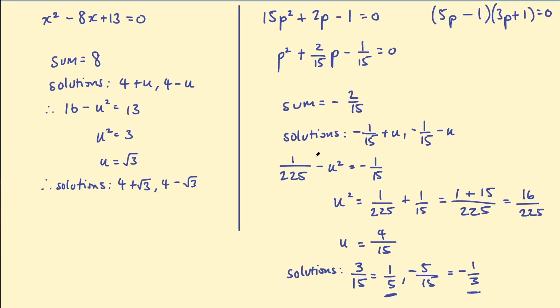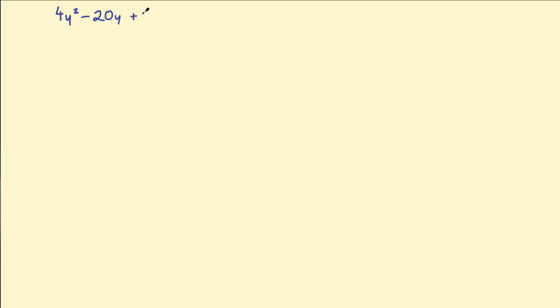Hopefully you're getting your head around how this works. You can see that even if you cannot factorise a quadratic, you can still follow this method, and compared to the quadratic formula you might find it more straightforward. Let's do one more example — maybe you can try it yourself. We have 4y² - 20y + 25 = 0. This is another example that does factorise, but give it a go with the new method.